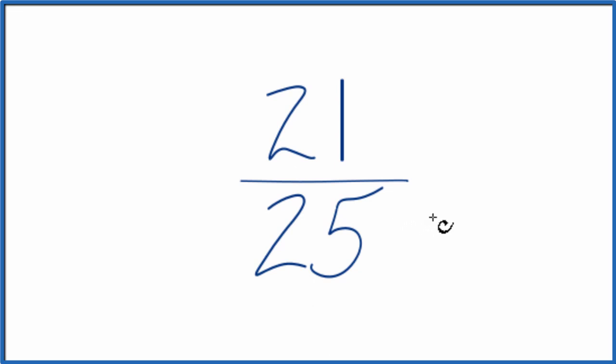We call that an equivalent fraction, just that we've simplified it or reduced it to lowest terms. So to do that, we need to find a number that goes into both 21 and 25. We're looking for the greatest common factor.